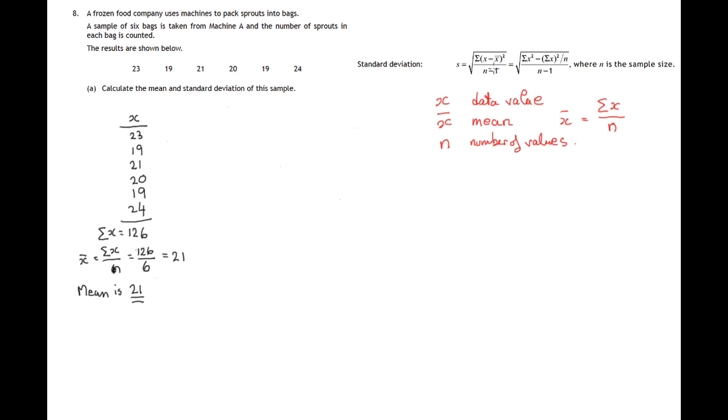So going back to this formula, we've now got to find the deviations from the mean, square them and then add these up. So another column goes in, which is called the deviations from the mean, how far away from this mean value of 21 are each of these data points. And we get this by taking the data value 23 and subtracting the mean value 21. So 23 minus 21 is 2, 19 minus 21 is negative 2, 21 minus 21 is 0, 20 minus 21 is minus 1, 19 minus 21 is negative 2, 24 minus 21 is 3.